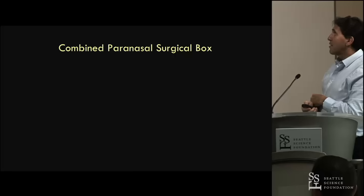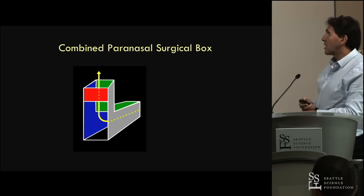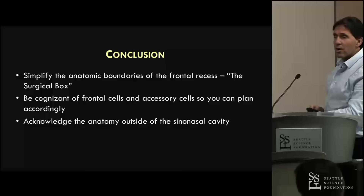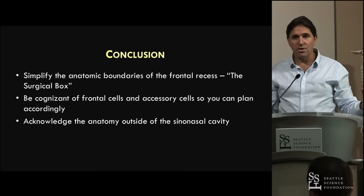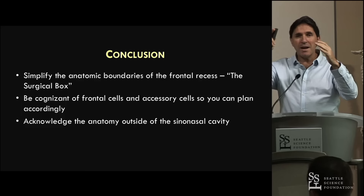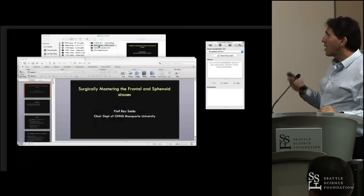If you combine your vertical and horizontal boxes, you end up with a complete sinonasal cavity. We must simplify the anatomical boundaries of the frontal recess into a box-like fashion. Think of the final cavity you want to achieve and everything else goes. The only thing I ever really worry about is the anterior ethmoid artery, whether it's dehiscent or not - because if I've got my landmarks, everything else between my landmarks is going. Not a problem at all. Thank you very much.